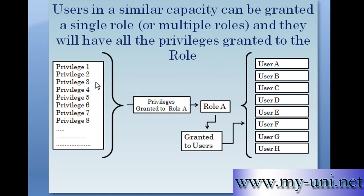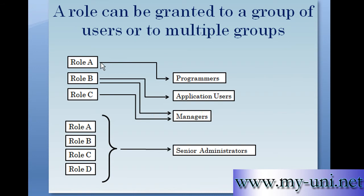So if Role A has been granted several privileges, and then this role has been granted to a number of users — User A through H — all the privileges granted to Role A have been granted to all those users. A role can be granted to multiple users. In this case, Role A has been granted to programmers who are supposed to perform similar activities, and Role B has been granted to application users.